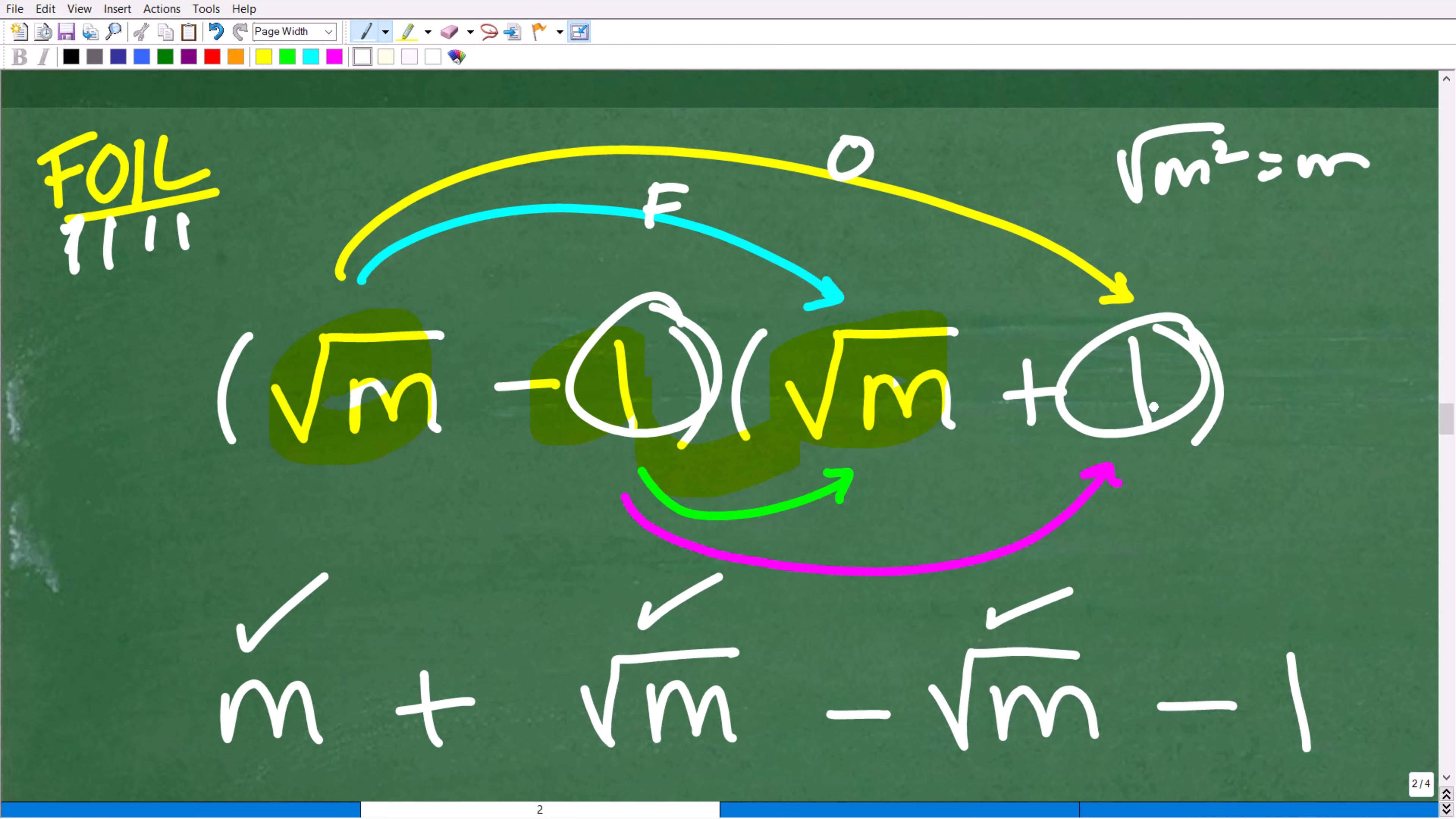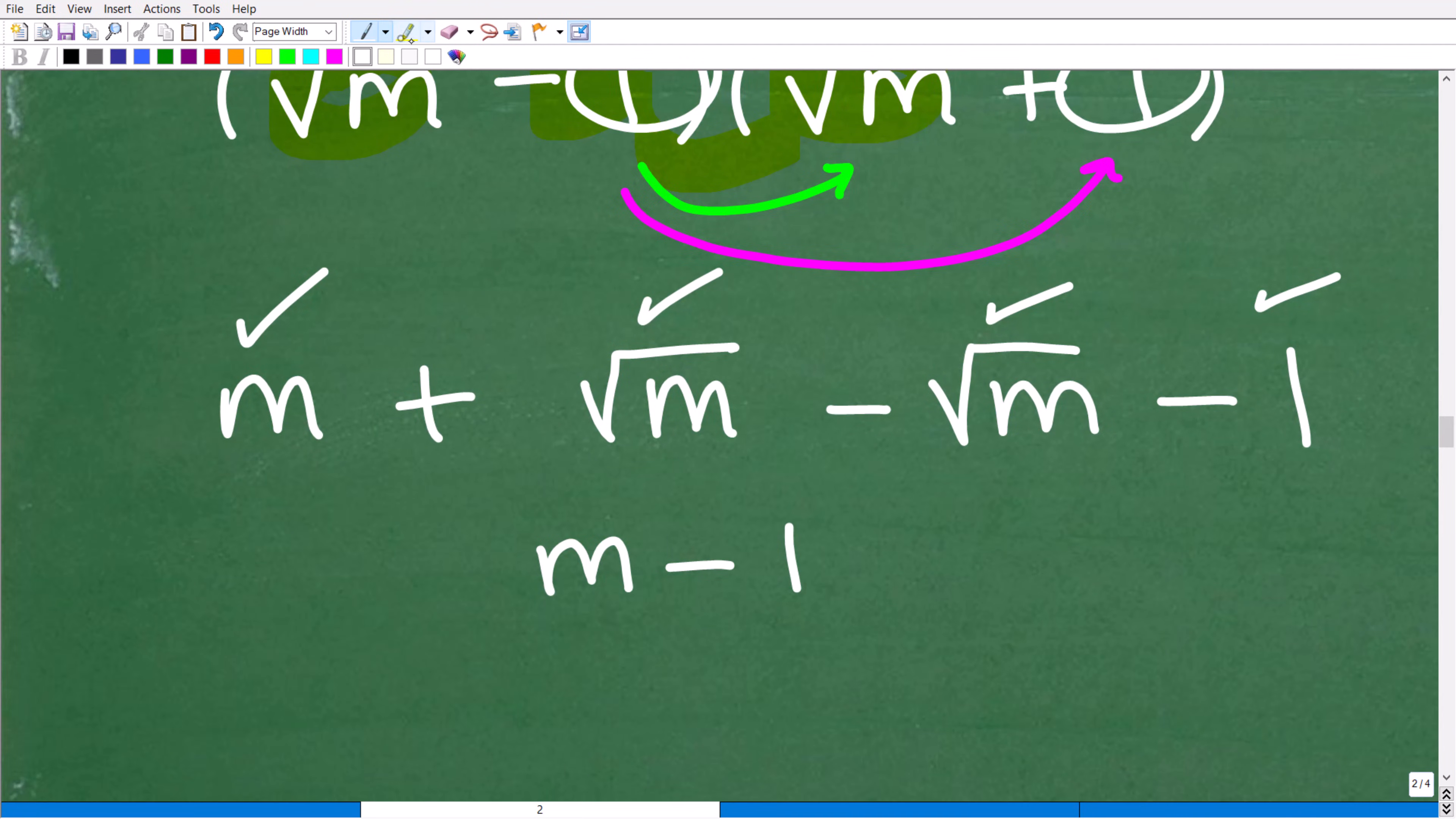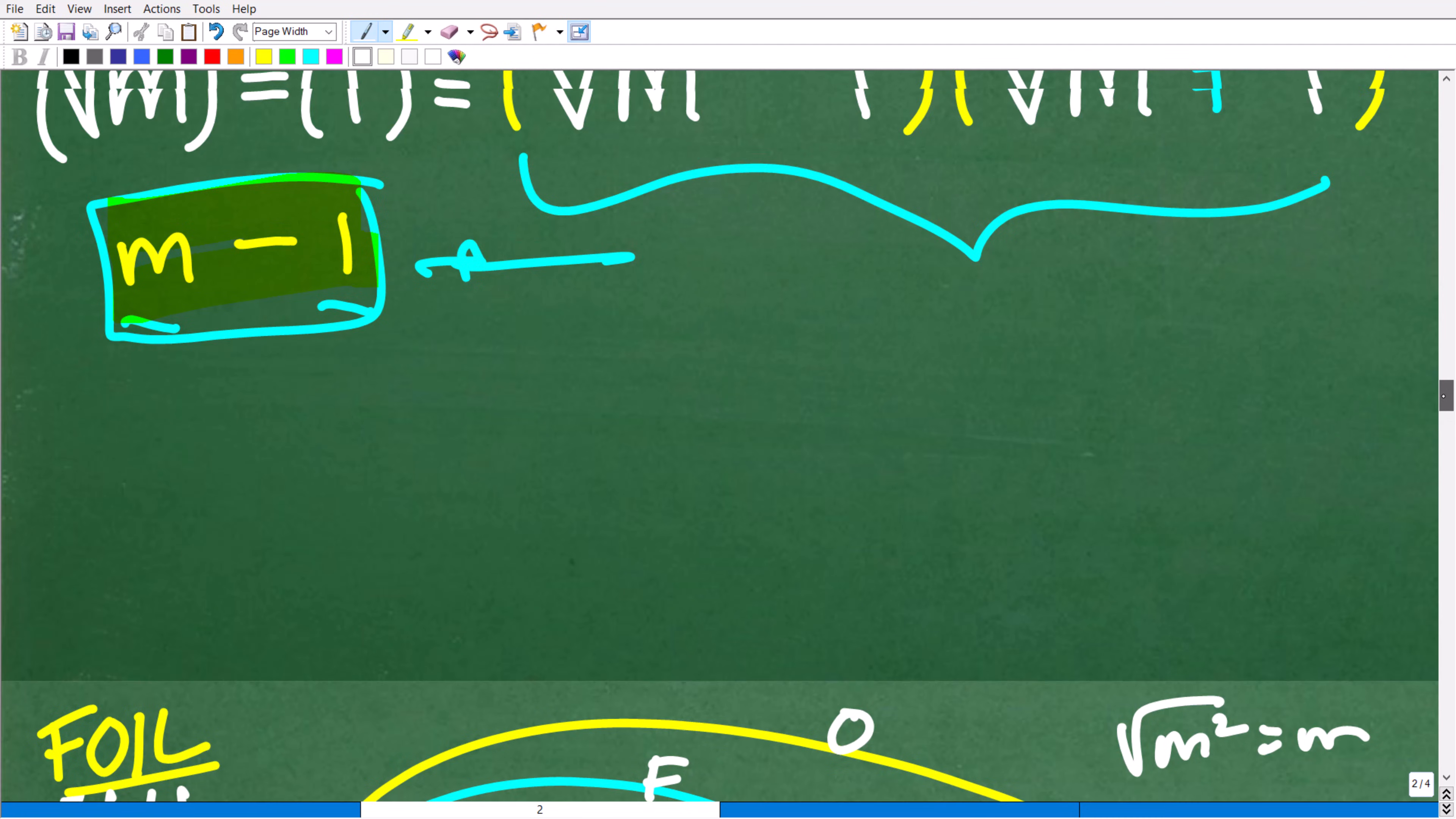And then L is our last, which would be our last terms. So we have negative 1 times a positive 1, which is negative 1. And you can see here that our square roots of m, this is a positive square root of m, minus a negative or minus square root of m, or plus a negative square root of m, is 0. These kind of cross cancel or they cancel each other out. So we're left with m minus 1, which, of course, is the same thing that we got when we were using the difference of two squares, m minus 1.